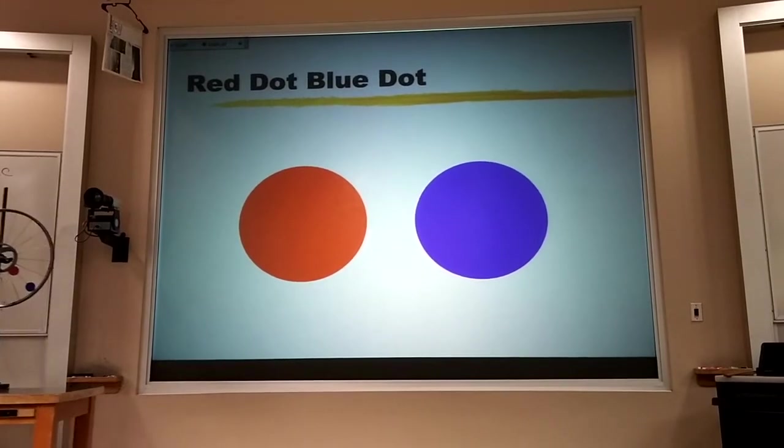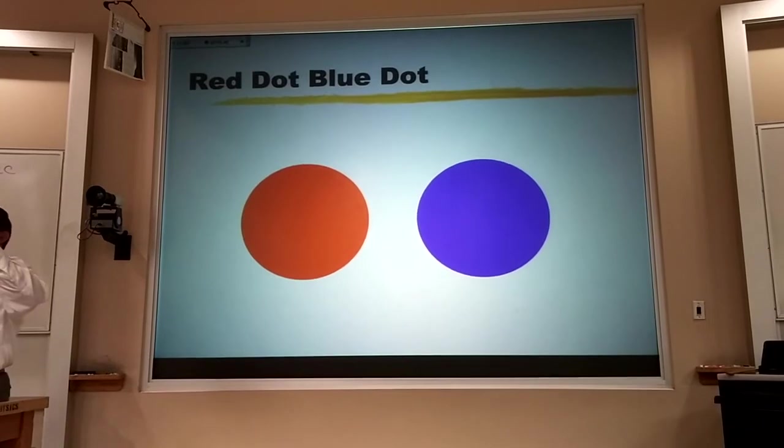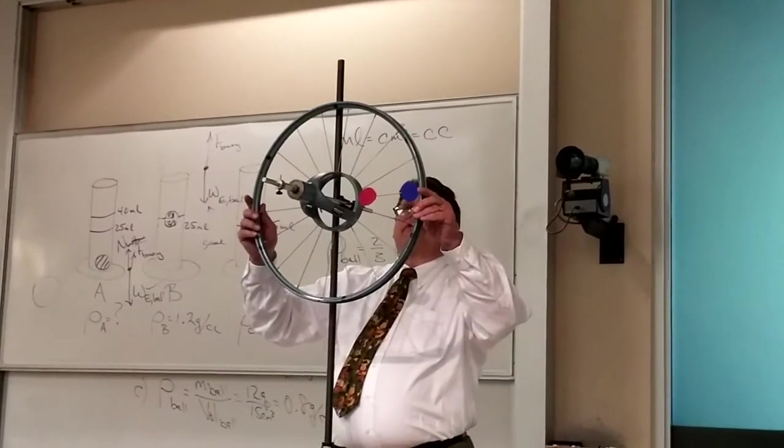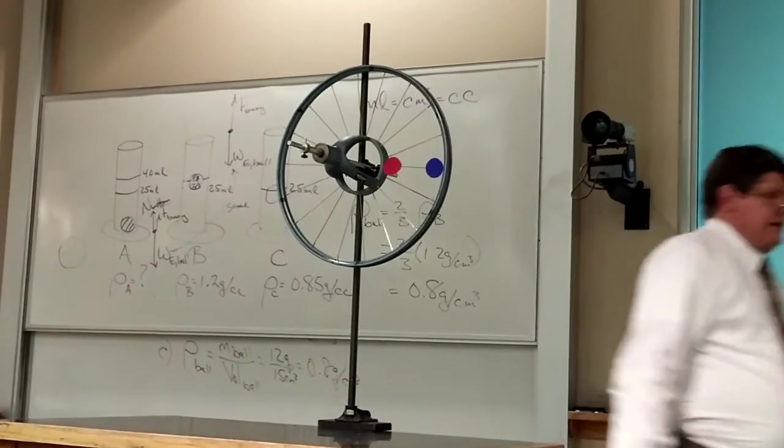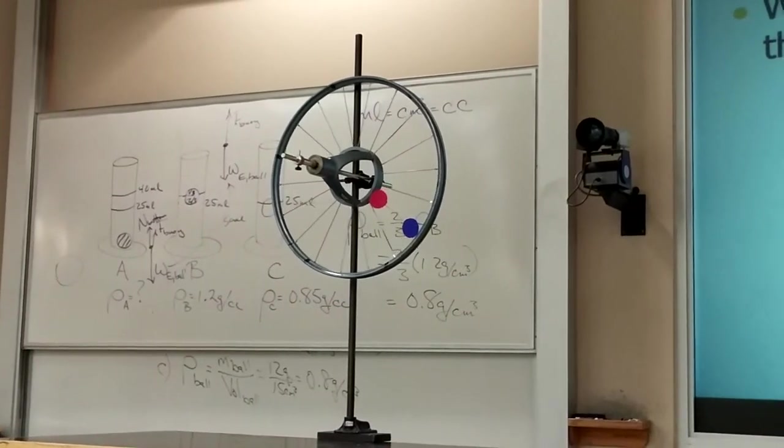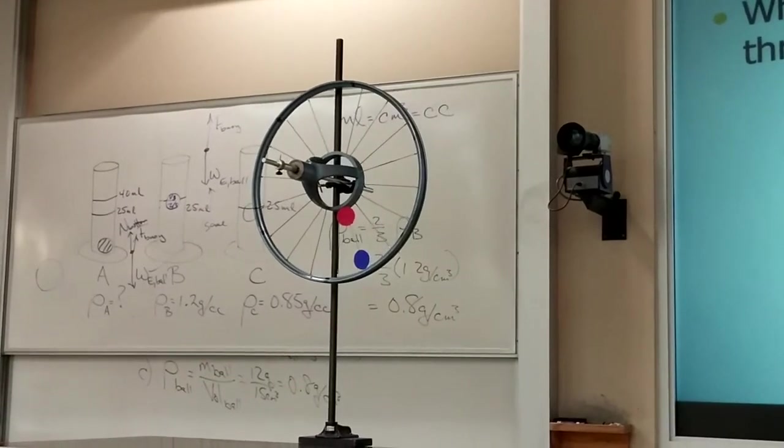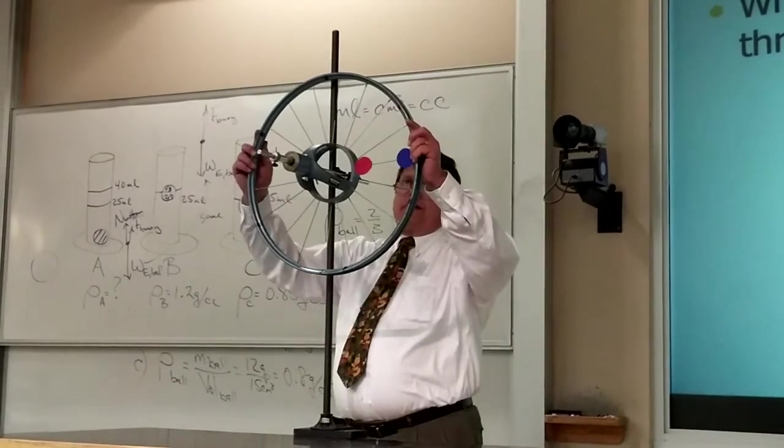I have two dots here, a red one and a blue one. I'm going to start them right there. I'm going to make the wheel go around once. And what angle did the red dot and the blue dot just go through? 360 degrees. And we all know that that was 360 degrees.